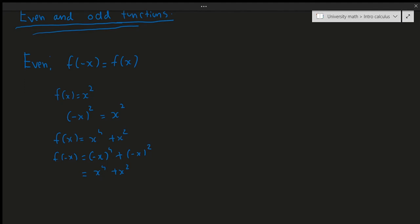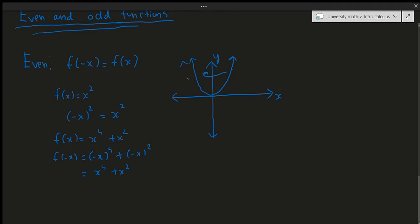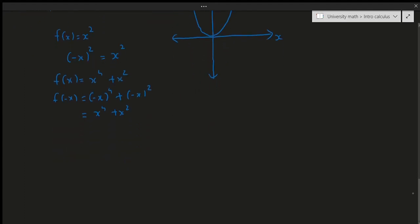You might notice that an even function is always symmetrical about the y-axis. For example, if I draw the graph of y = x², and I reflect it about the y-axis, I get a mirror image of x² on the other side. Because it's symmetrical about the y-axis, it's an even function.